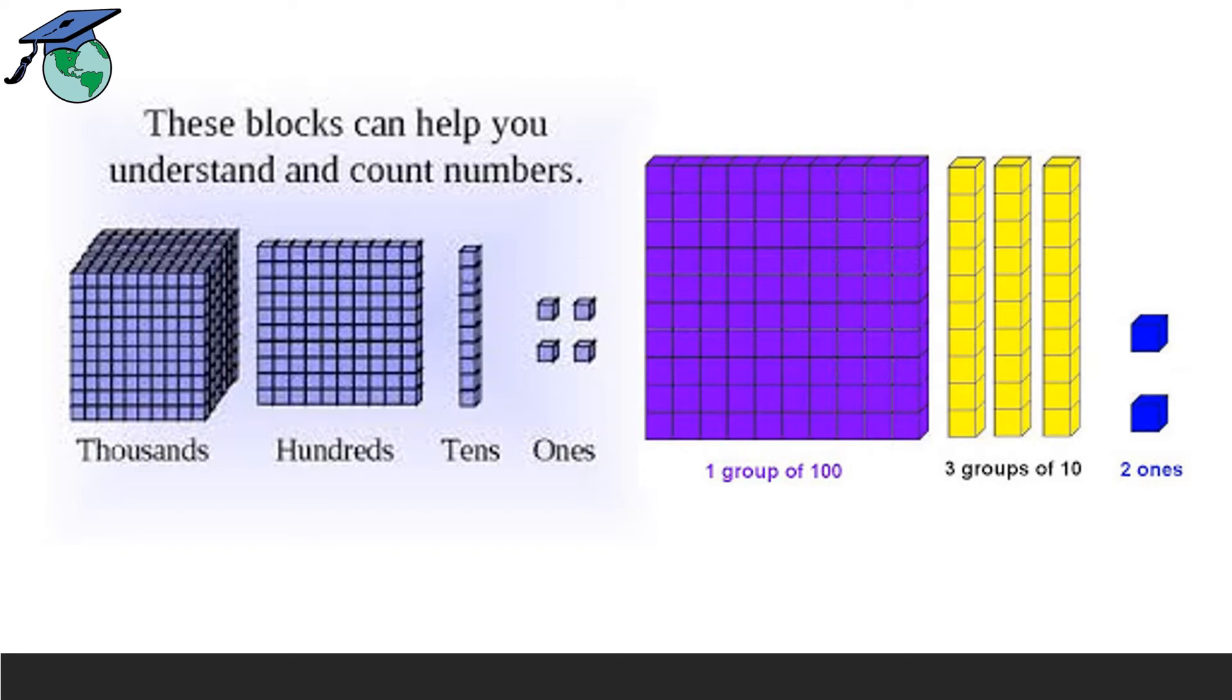Now, the next three groups of 10. You can see the yellow color blocks are having each group of 10. Each is having groups of 10. That means, how many groups are there? There are three groups: 1, 2 and 3. Three groups of 10. The next one is one group of 100. This is just a group of 100.